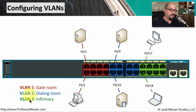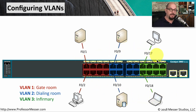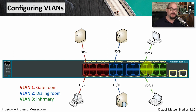For example, we have three VLANs in this example. The red VLAN is the gate room, the blue VLAN is the dialing room, and the green VLAN is the infirmary. None of the devices on the red network can communicate to any of the others. The blue network cannot communicate to any of the other networks. The green network is also segmented onto its own VLAN. The only way these VLANs could possibly communicate with each other is to route traffic between the different VLANs, which we'll cover in an upcoming video.